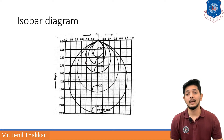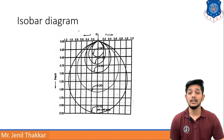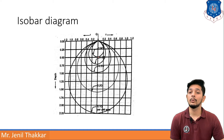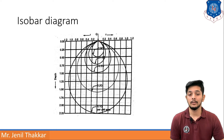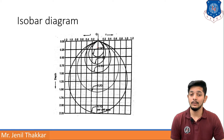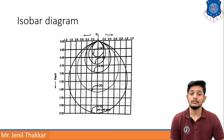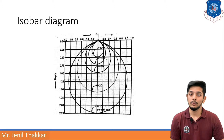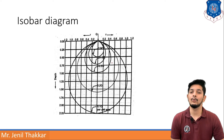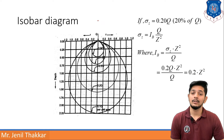Let us understand the isobar diagram through this figure. We can see that horizontal planes have equal amounts of vertical stress at the same radius from the axis of loading, and those points form a pressure bulb. Inside the pressure bulb there is a greater amount of vertical pressure. We can conclude that the pressure bulb shows decreasing stress values from inside to outside, because interior values are greater than exterior values.